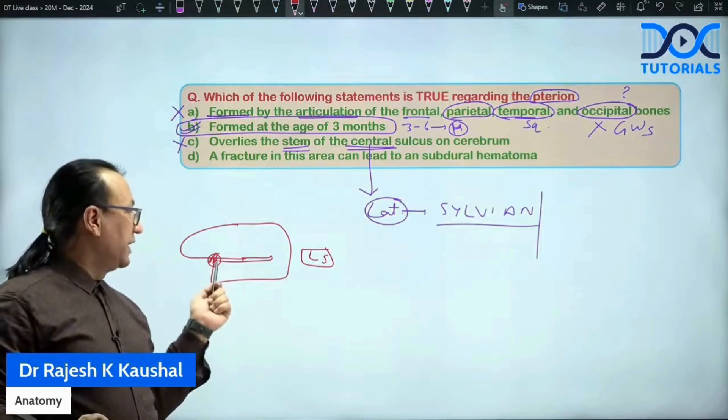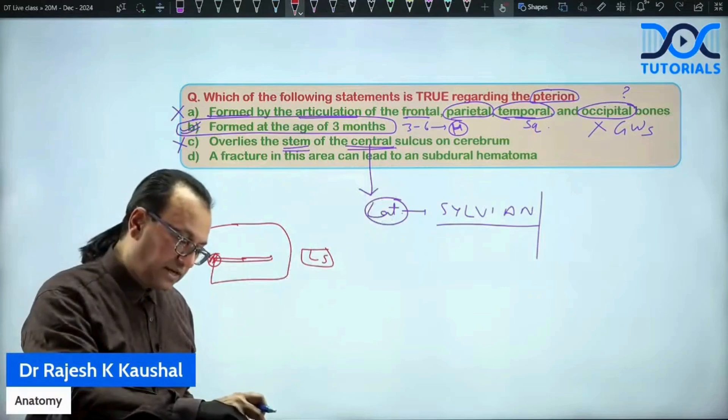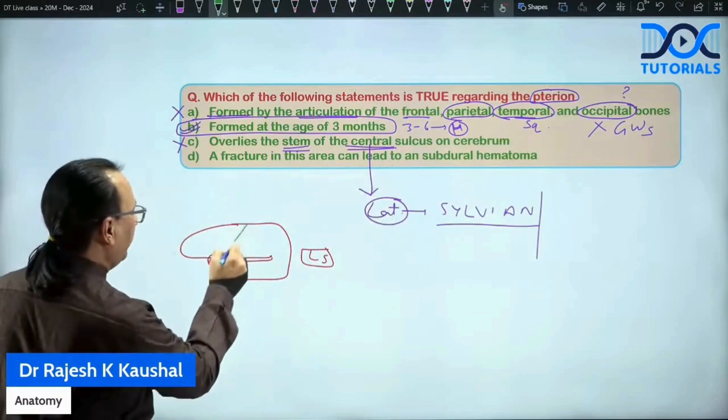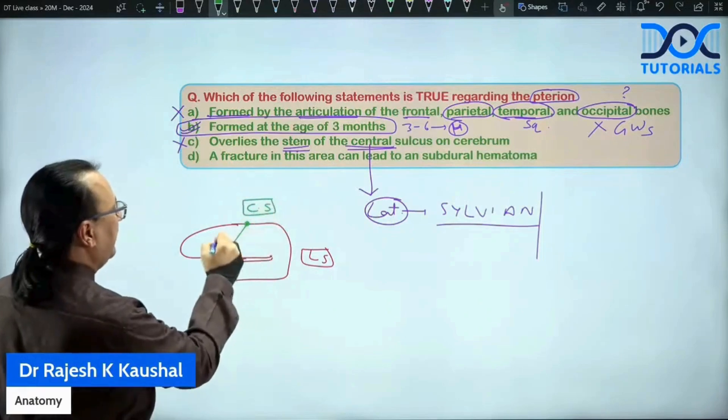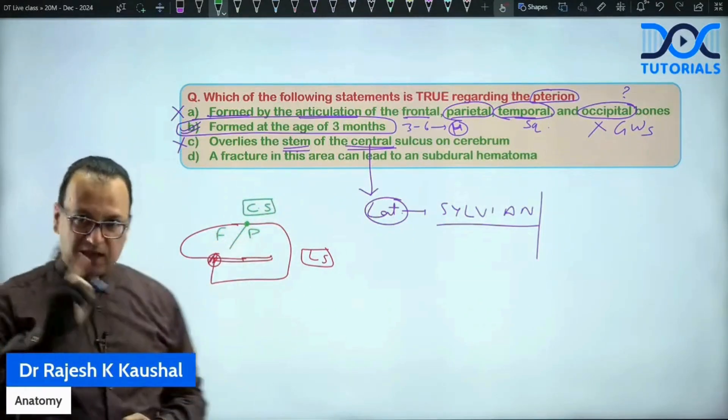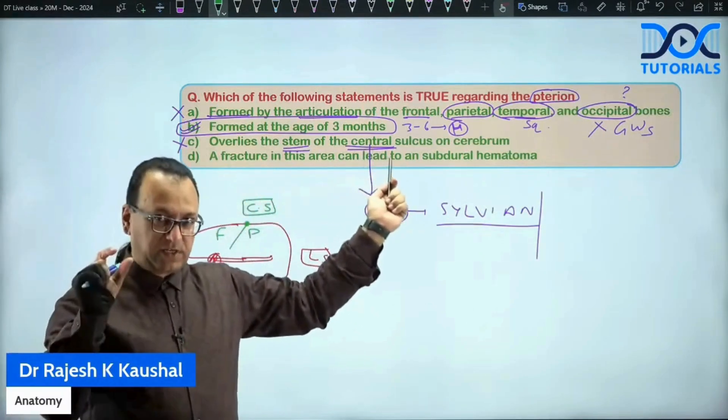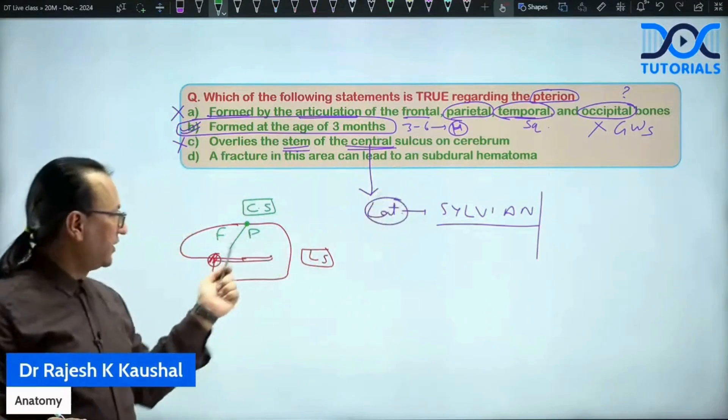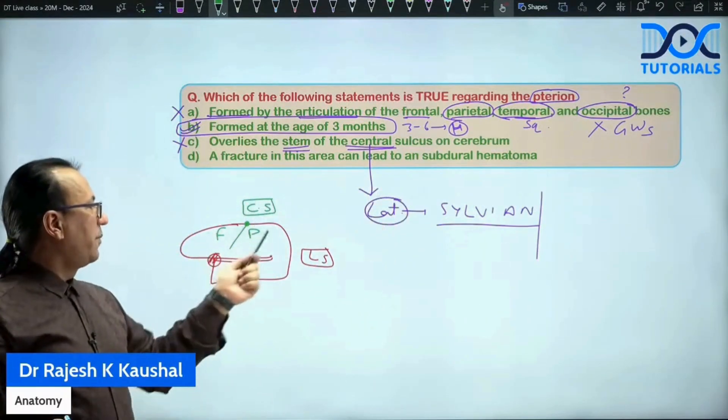So beginning at the stem of the lateral sulcus or what is called as the sylvian sulcus. That is where pterion is. And what about the central sulcus which they have mentioned? If you want to talk about central sulcus, central sulcus will be running anteriorly like this. This is central sulcus. So that is central sulcus which separates frontal lobe from the parietal lobe. And that is not where we have the pterion.